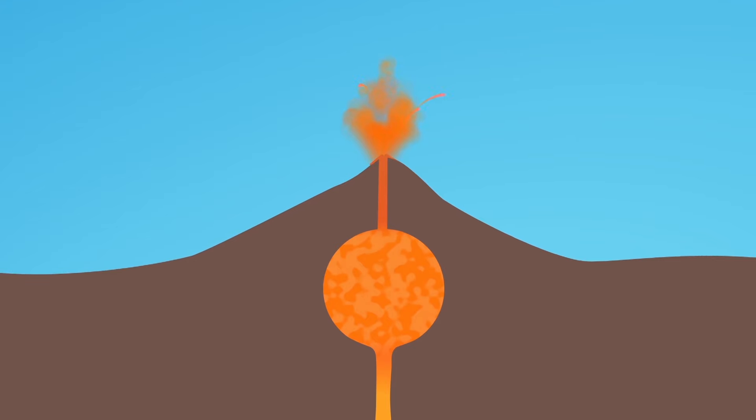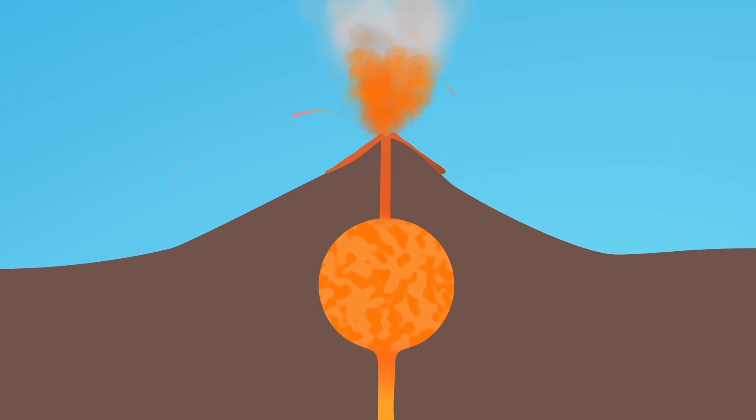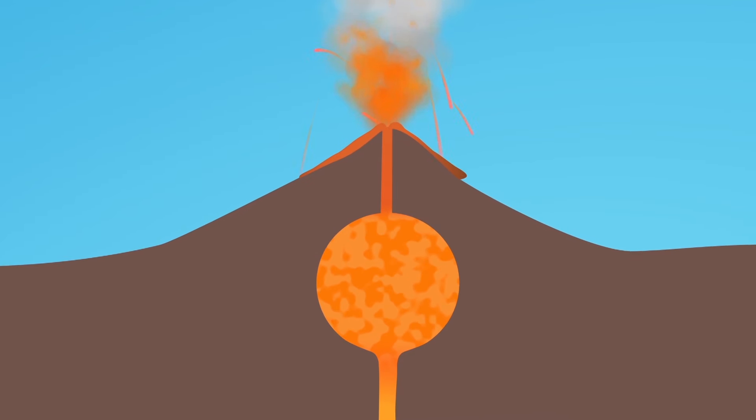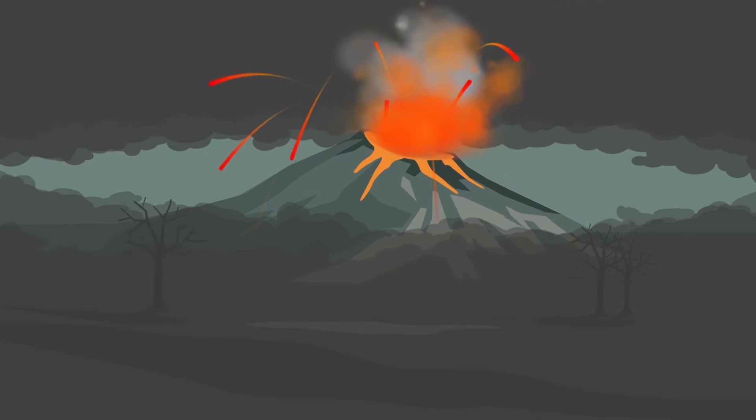Suddenly a heavy plug of stone explodes out of the chimney. Red-hot magma shoots out of the crater and turns into lava when it runs down the slopes. The volcano has erupted.